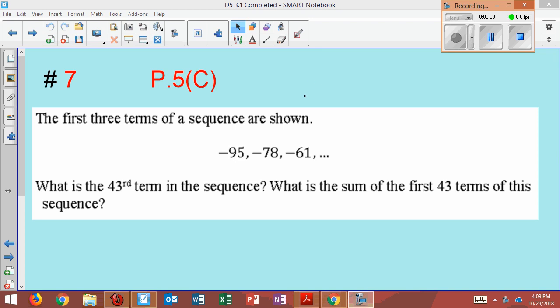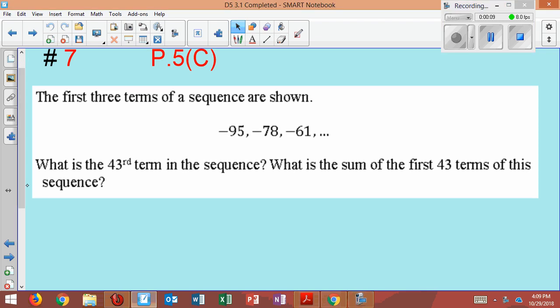The first three terms of a sequence are shown: negative 95, negative 78, negative 61, and continues on. What is the 43rd term in the sequence? What is the sum of the first 43 terms in the sequence?